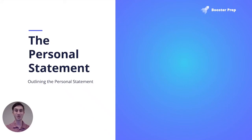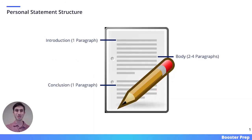Continuing our dive into the personal statement, this video will focus on the process of outlining and formatting the personal statement. Every personal statement is made up of three components: a one-paragraph introduction, between two and four body paragraphs, and a one-paragraph conclusion. We're going to go through each of these components in this video to help you in the writing process.